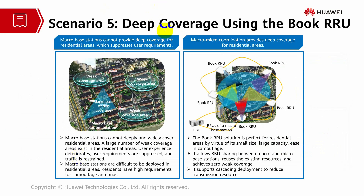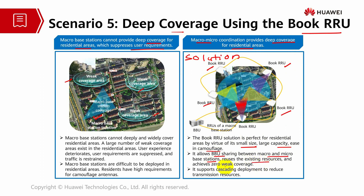Scenario 5 is deep coverage using the book RRU. Macro base stations cannot provide deep coverage for residential areas, which suppresses user requirements. Large coverage gaps exist and user experience deteriorates. The book RRU solution uses macro-micro coordination to provide deep indoor coverage for residential areas. The book RRU is suitable for residential areas because of its small size, large capacity, easy camouflage, and ability to share the macro-micro base station. It reuses existing macro resources to achieve zero weak coverage and supports cascading deployment to reduce transmission resources.